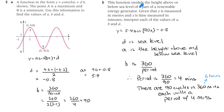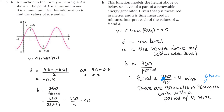This function models the height above or below sea level of a part of a renewable energy generator, given that y is measured in metres and x in time measured in minutes. d would be the sea level, a is the height above or below sea level, and b is 360 divided by the period. Since b is 90, the period is 360 divided by 90, which works out to 4 minutes. There are 90 cycles in 360 minutes — which is actually 6 hours — each with a period of 4 minutes.